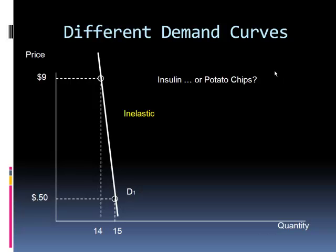Let's try another example. Here we have a price change from $0.50 up to $9.00 — a huge price increase — but people keep buying almost as much as they did anyway. Does this reflect the demand for insulin, a necessary medicine for a diabetic, or the demand for potato chips? How many substitutes do you know for insulin? How about for potato chips? It should be clear this is the demand curve for insulin — you've got to have it regardless of the price. This illustrates the concept of elastic versus inelastic demand.